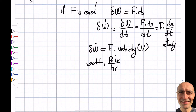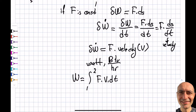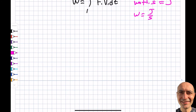I started with the constant force case, but it doesn't have to be constant. In the general case, the work from point one to point two is the integral of F times v times dt. If F and v are constant, you can take them out, giving F times v times time. Watts times seconds is joules — I'm going over this multiple times so you don't confuse them.